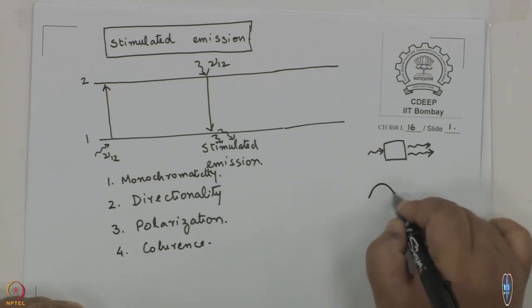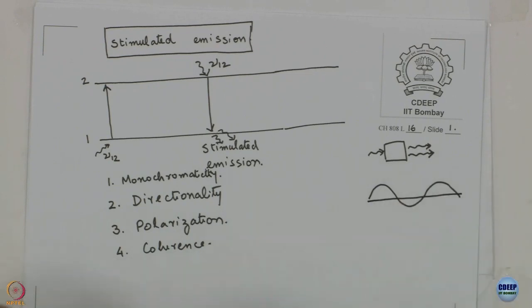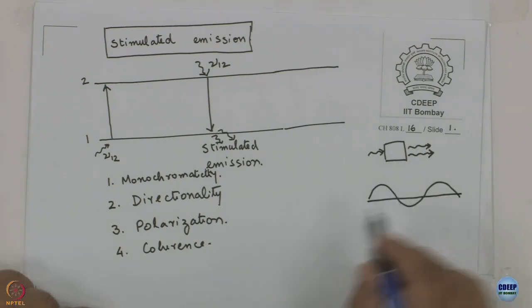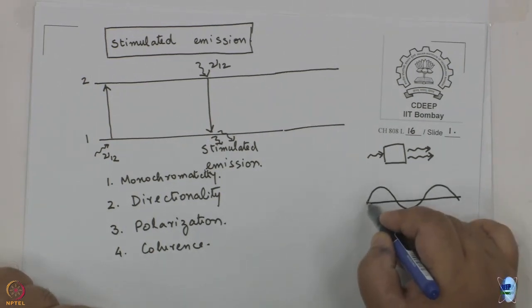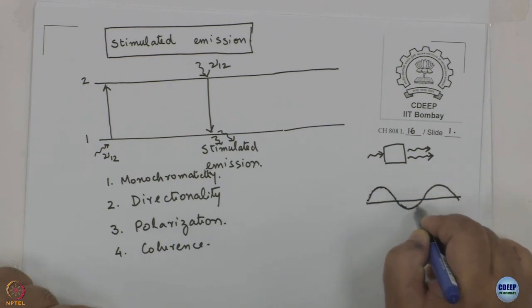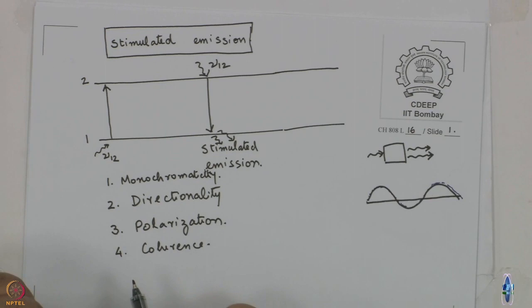Another important property is coherence. Coherence means not only are the two light waves monochromatic — meaning exactly the same wavelength — and polarized, meaning the oscillations are in the same plane, but they are also in step: the light that comes out as stimulated emission is exactly in phase with the light that causes it. These are the properties that make stimulated emission a suitable candidate for light amplification and obtaining lasers with the properties that most lasers have.